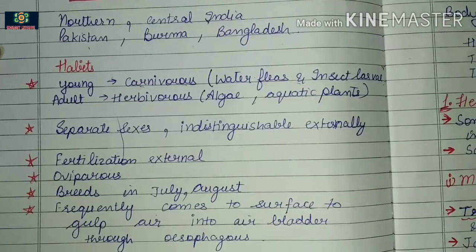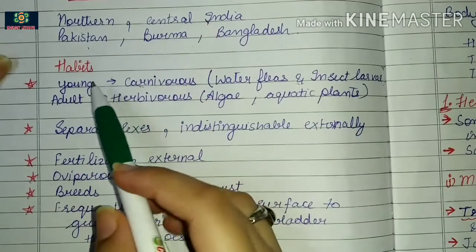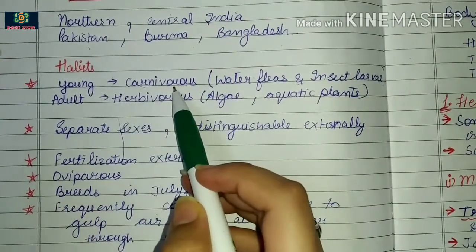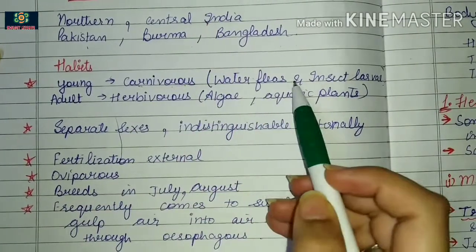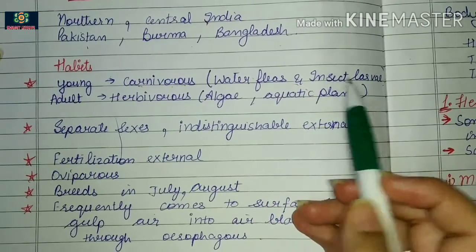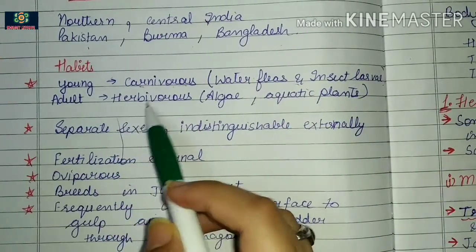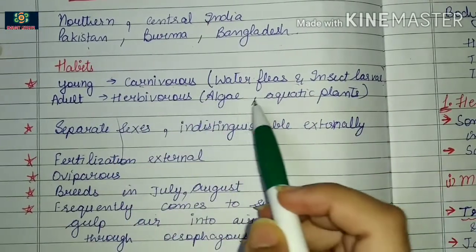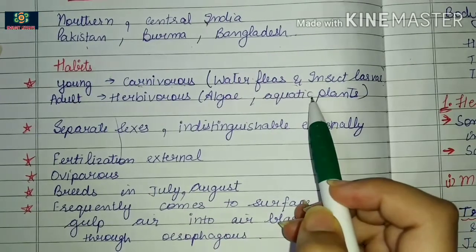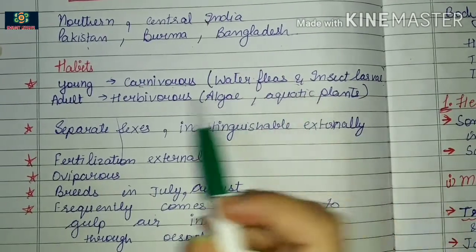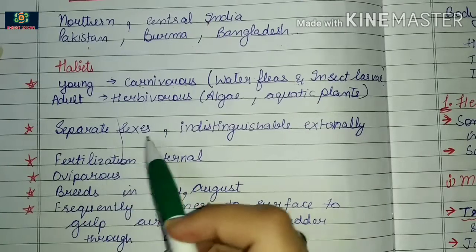Let's talk about its habits. When it's young, it is carnivorous, feeding on water fleas and insects. When it becomes an adult, it is herbivorous, feeding on algae and aquatic plants.